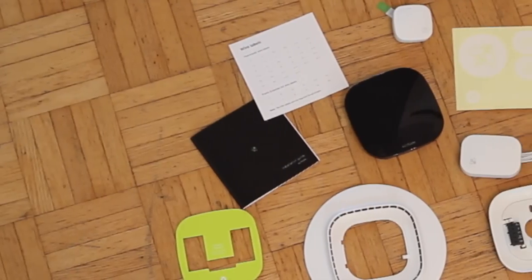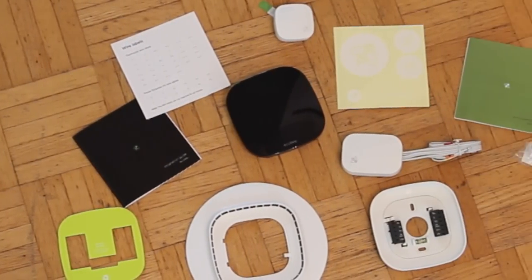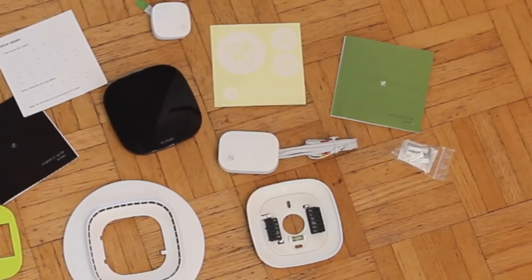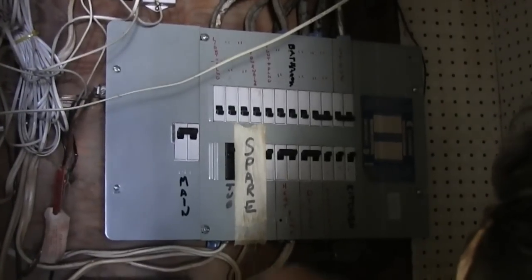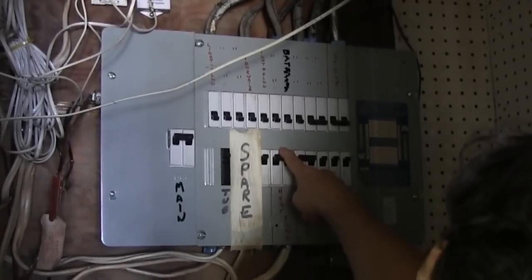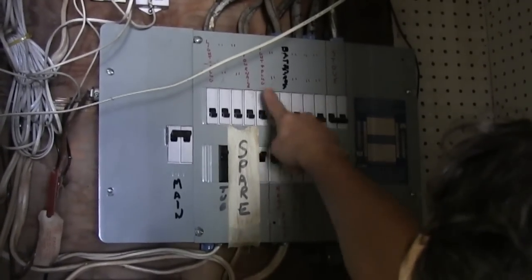So when we installed the ECO-B3, we read through the instructions first. ECO-B did a good job making the process seem simple. First, we went into the garage to power off the HVAC system. That was the simple part.